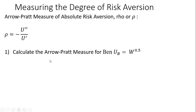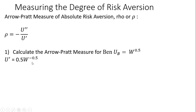So now for some examples, we're going to calculate the Arrow-Pratt measure of risk aversion for Ben. His utility function is given by w, wealth, raised to the 0.5 power. The first thing we need to do is get the derivative of the utility function with respect to wealth. The 0.5 in the exponent comes down in front, and then we subtract 1 from that exponent, so 0.5 minus 1 leaves us with wealth raised to the minus 0.5 power.